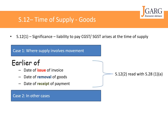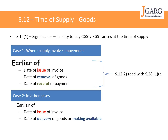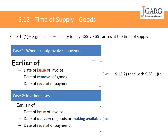The next case is where the goods do not involve movement, or in any other case. Similar to the above, the time of supply is the earlier of: the date of issue of invoice, the date of delivery of goods or making goods available to your customer, or the date of receipt of payment — whichever is earlier. On that date, one needs to pay tax to the government. This is in line with Section 12 subsection 2 read with Section 28 subsection 1 clause (b).